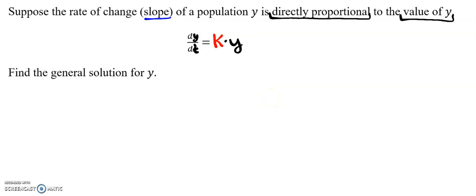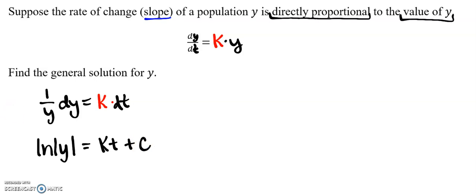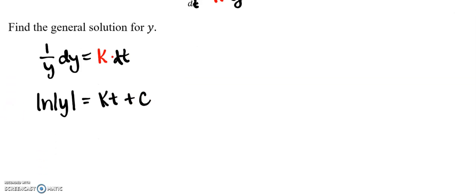So find the general solution for y. So the first thing is I'm going to separate my variables. So I'm going to get one over y dy equals k times dt. I'm going to take the antiderivative. So on this side, I get the natural log of the absolute value of y. This side, I'm going to get kt plus C.